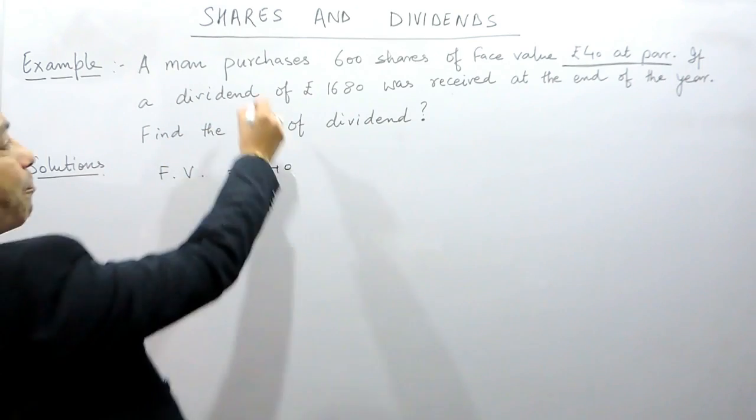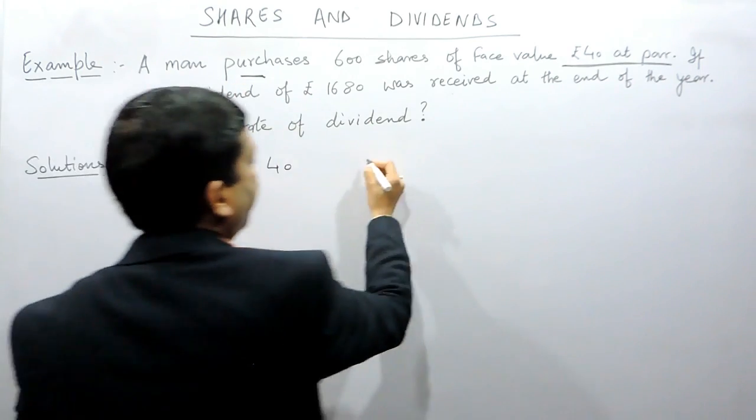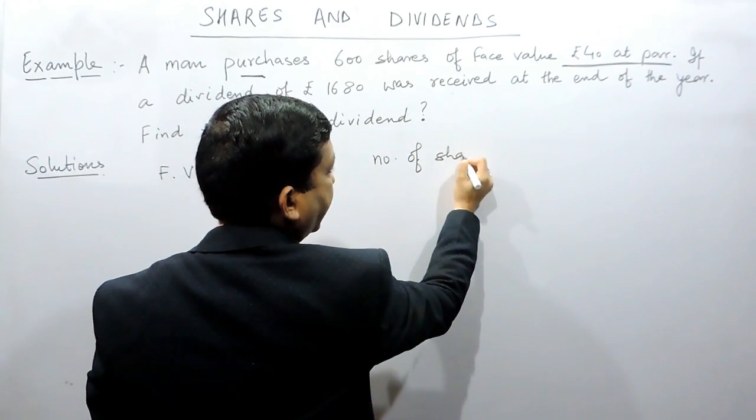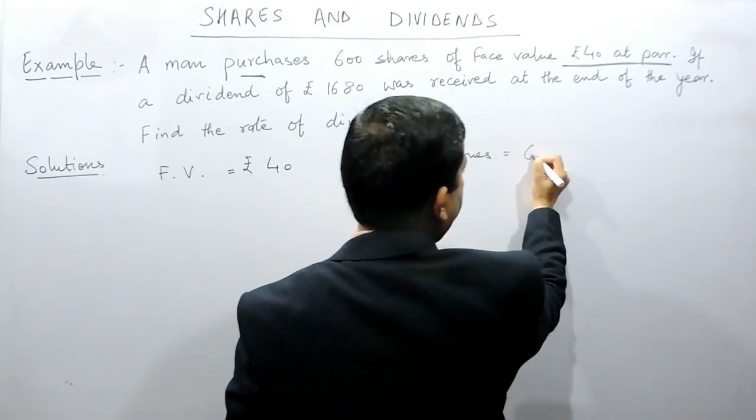Now, a man purchases 600 shares. It means the number of shares which he has to purchase is 600.